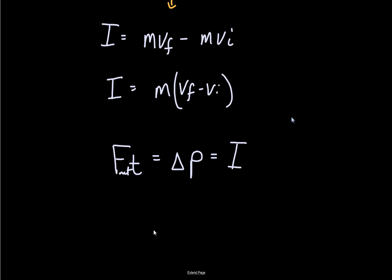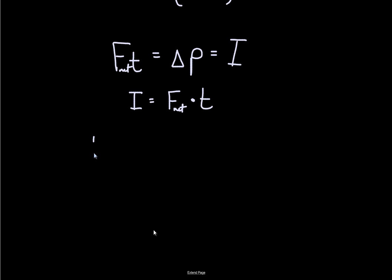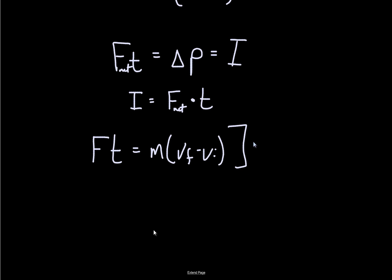So another equivalency we get is that impulse equals a net force applied to an object for some amount of time. So there's another definition of impulse. And if this is true, then we should be able to substitute in F-net times t in for the change in momentum. Force applied for a time causes a mass to change its velocity. I'll tell you a secret — this is actually Newton's second law, just written slightly differently.